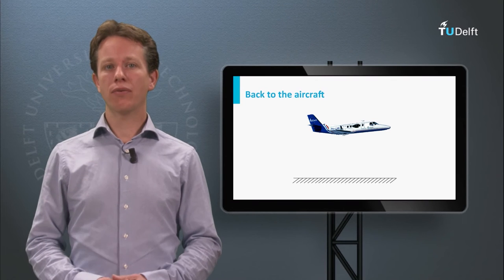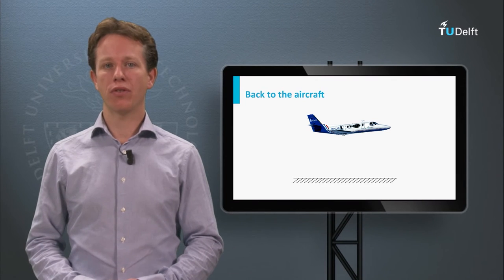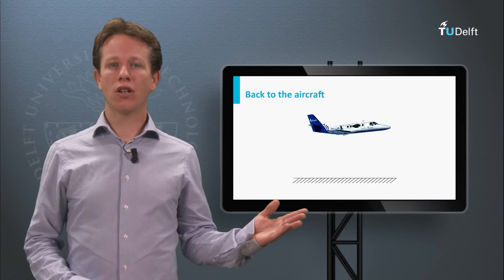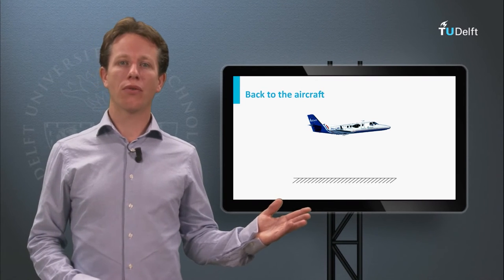We should clearly define the different frames of reference. A logical point to start with is the Earth's surface, so we can define a reference frame fixed to the Earth, called the Earth axis system. Of course we are interested in the motion of the aircraft relative to this frame — but is this frame an inertial frame of reference or not?